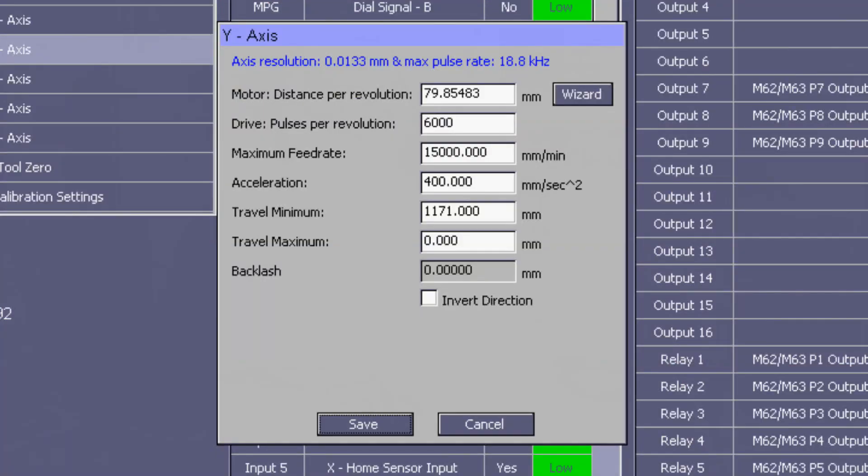When we take a look at the y-axis settings, we can see we have a maximum travel of 0 and a minimum travel of 1171. We can instantly see that this is incorrect because the maximum travel should always be larger than the minimum. If you don't do this, you end up with one direction of travel only. To fix this is simply a matter of swapping the two figures around.